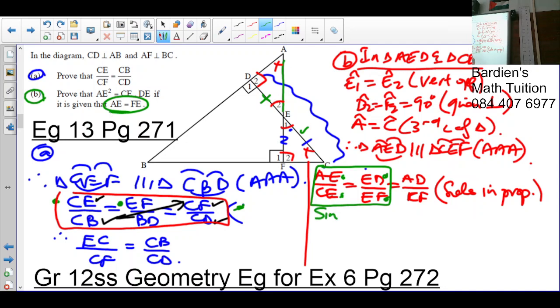So we are going to replace. We say since AE is equal to FE, where are we getting that? It was given to us. Therefore, AE over CE is equal to ED over and that will replace with AE.